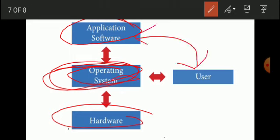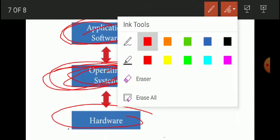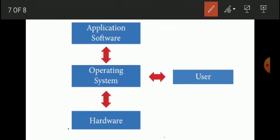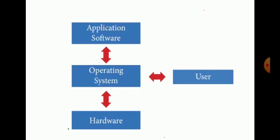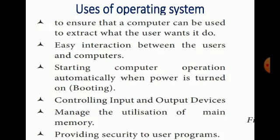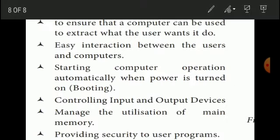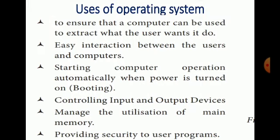Without the operating system, we cannot enable the hardware or open application software. The operating system acts as an interface between the user and application software. The first use of the operating system is to ensure that the computer can be used to extract what the user wants to do.